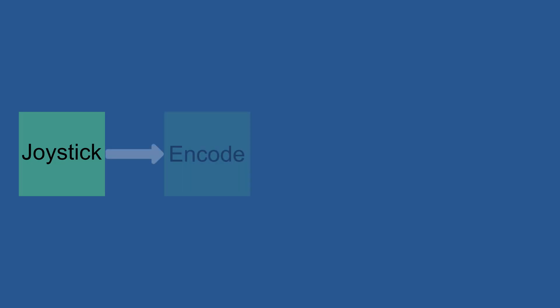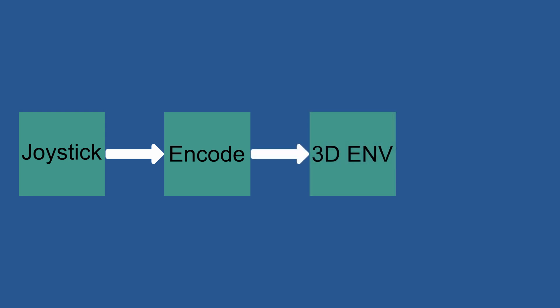We can divide this up into four different sections. The first section is the joystick that gets our input. The second section is how we convert an electrical signal from the joystick into something that the computer can understand. The third section is how to create a 3D environment to hold our 3D objects and lights. The fourth and last section is the dynamic control of the 3D projection mapping.